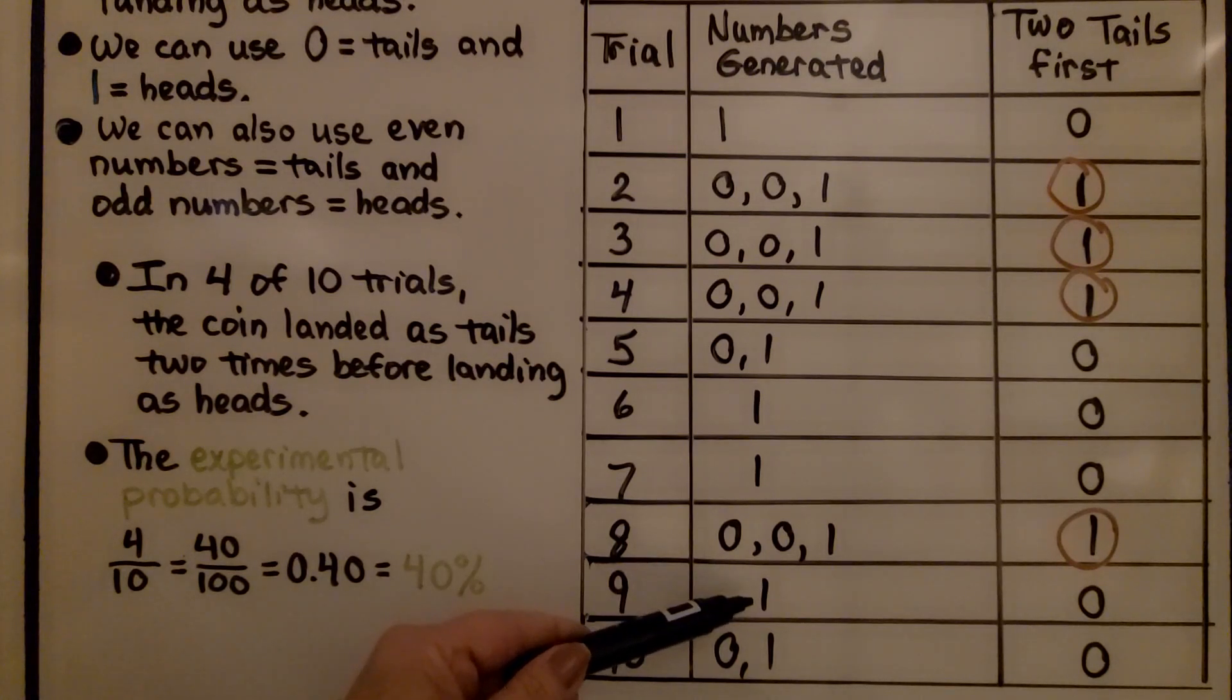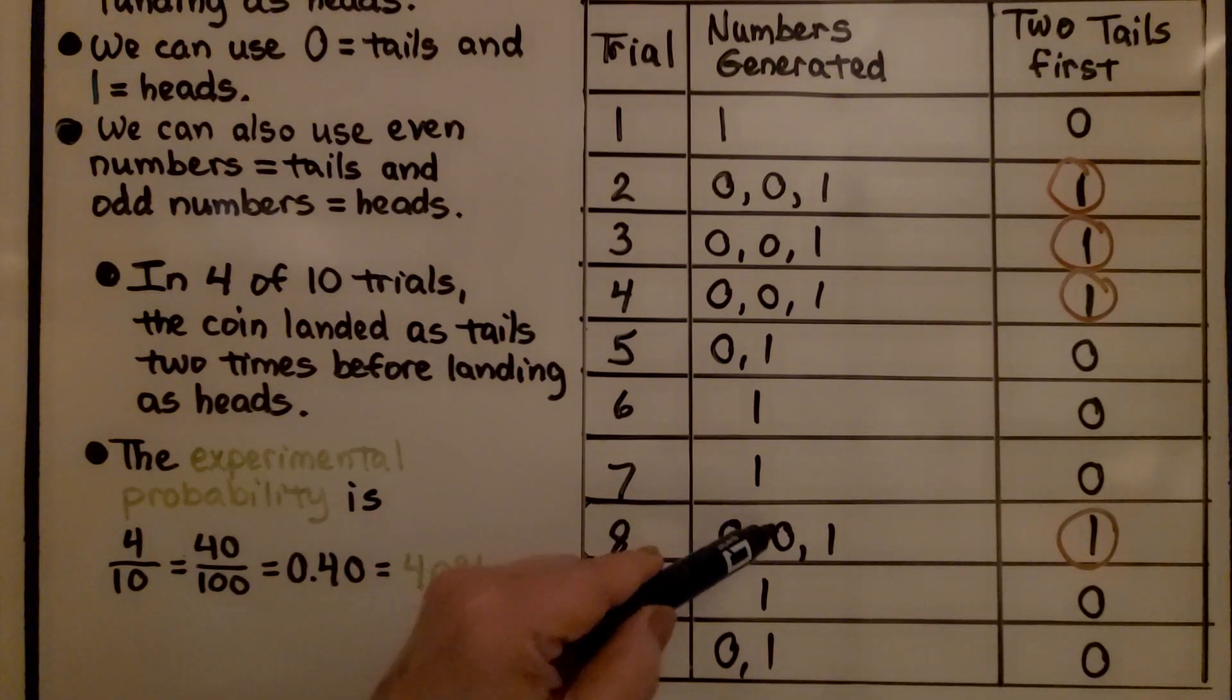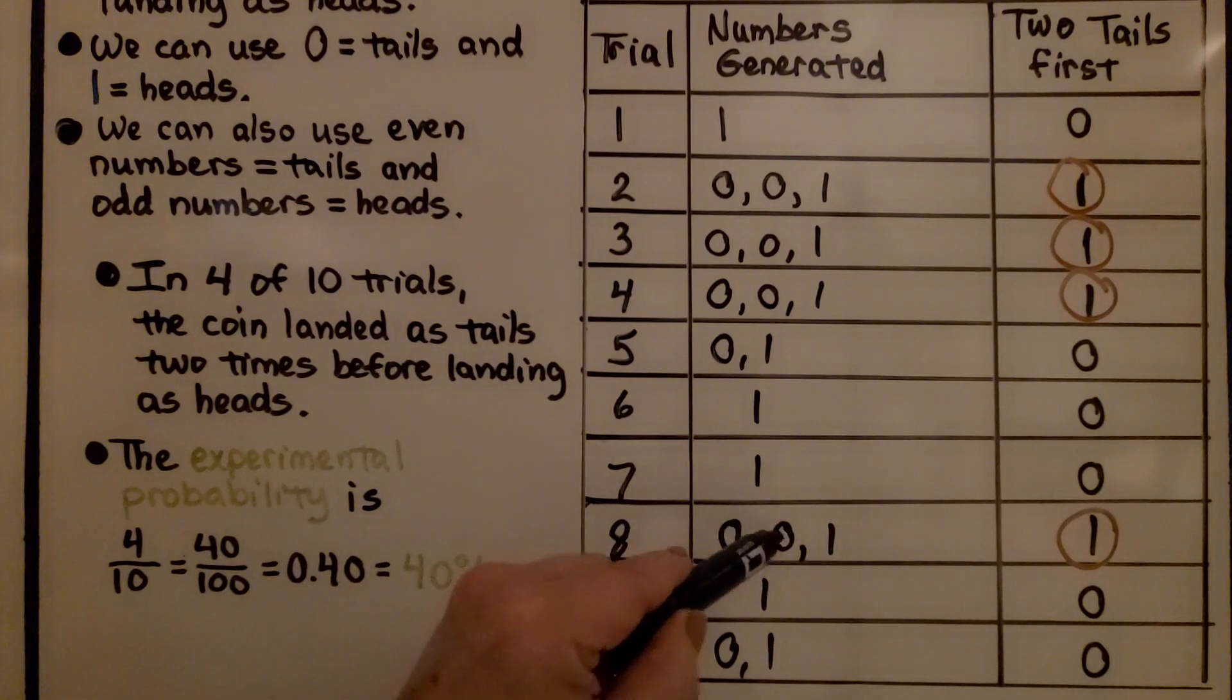Then on the 9th trial, I got a 1. So, I got a 0. And then on the 10th trial, I got a 0 and a 1. So, that's a 0. Because it needed to be 2 zeros and then a 1 for 2 tails and then a heads.